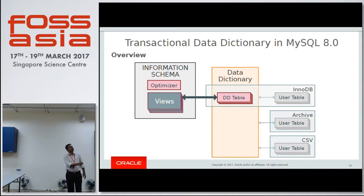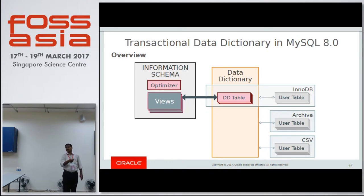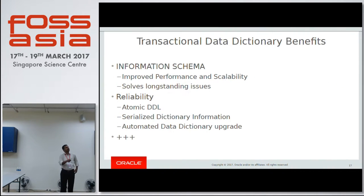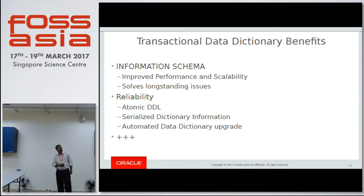If you run an information schema query now, it just goes through the optimizer and it is a view based on the dictionary tables. This infrastructure change is mostly a change in the core of MySQL server. What you see as an end user is two major things: information schema performance is improved, and DDL operations are more reliable. It enables the server to make DDLs atomic, and we now have serialized data dictionary information — you can move a table from one instance to another using serialized dictionary information.